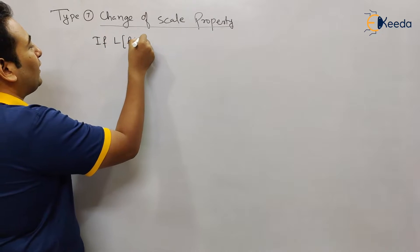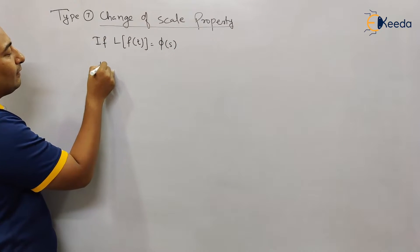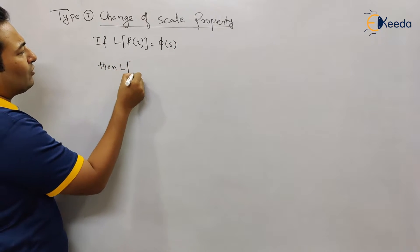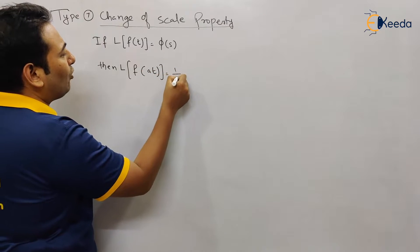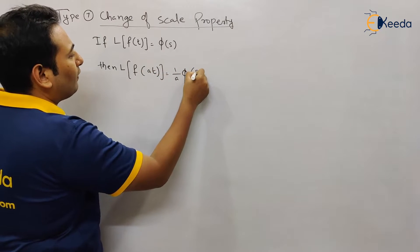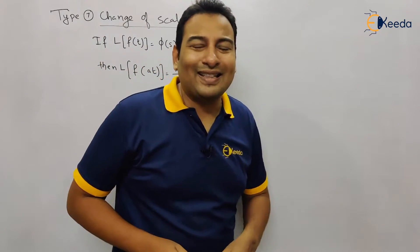If Laplace of f(t) is equal to φ(s), then Laplace of f(at) is equal to (1/a)φ(s/a). So this is your change of scale property.